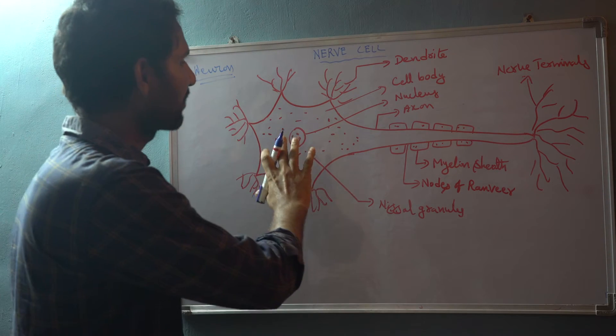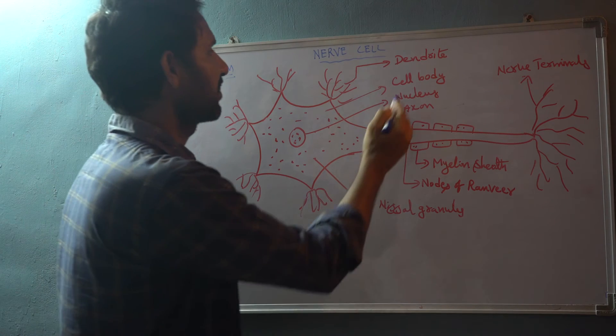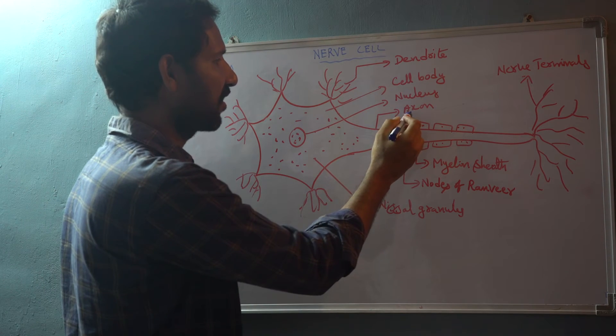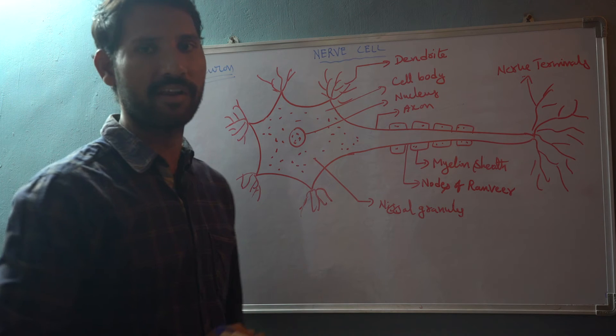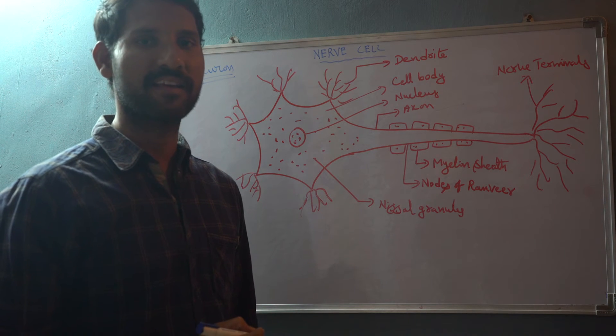So the nerve cell has a very simple structure. You can see majorly three parts: dendrites, axon, and cell body. The cell body is also known as cytone.